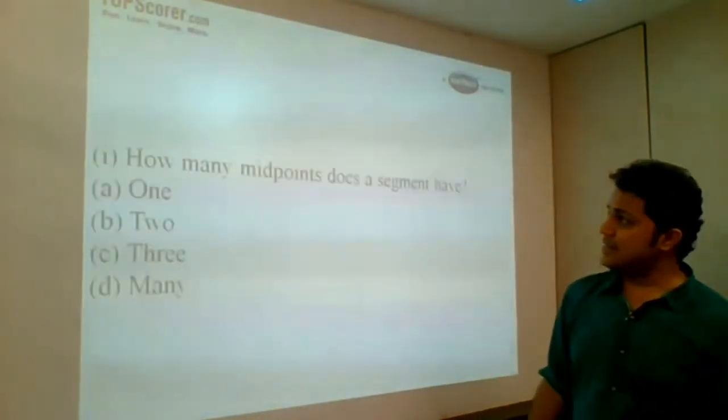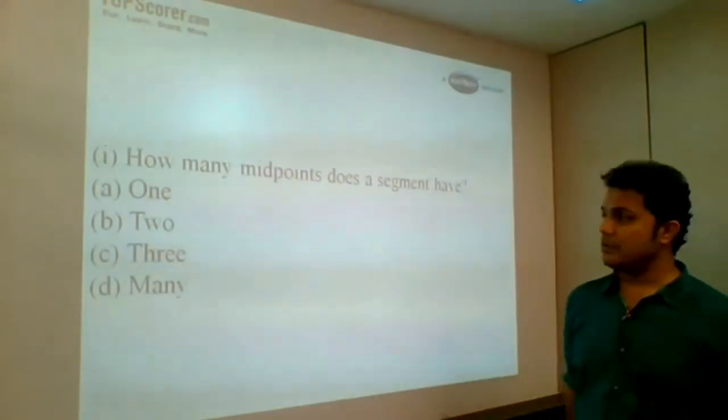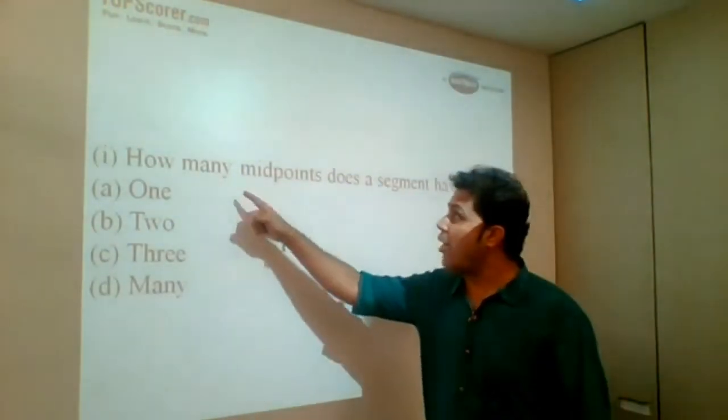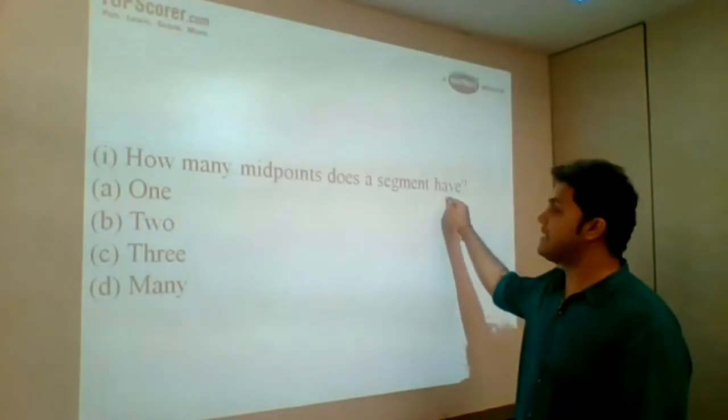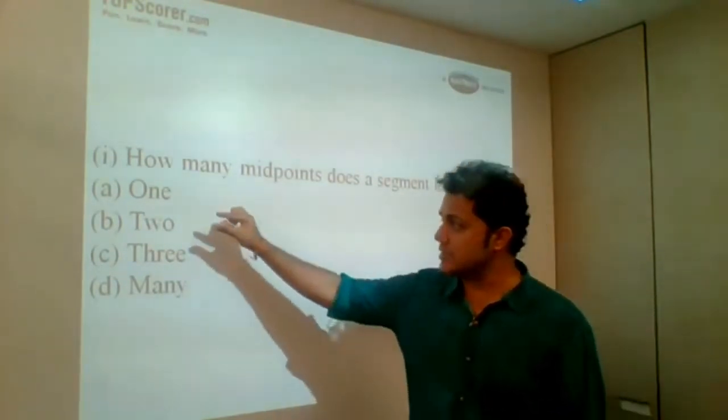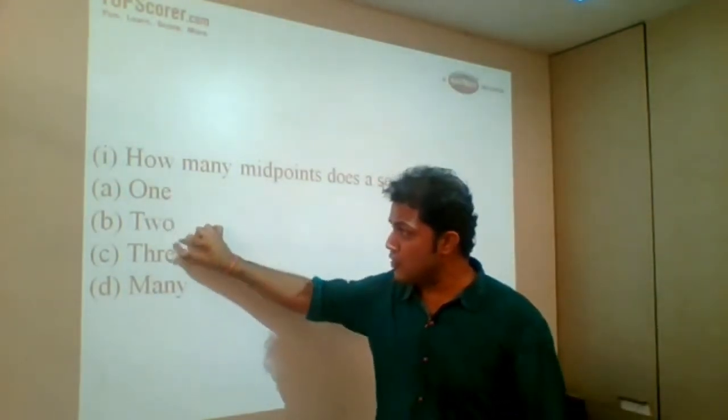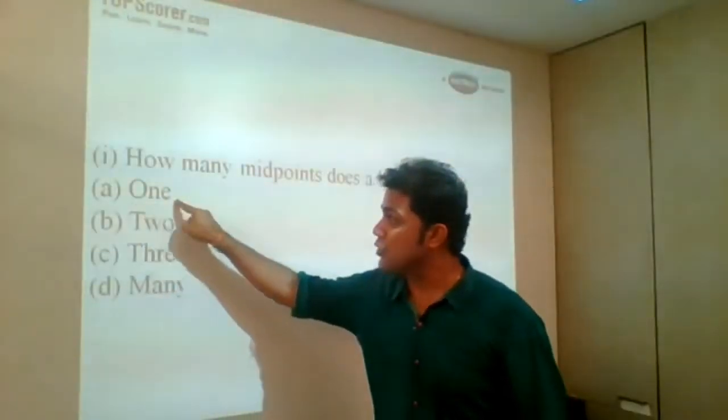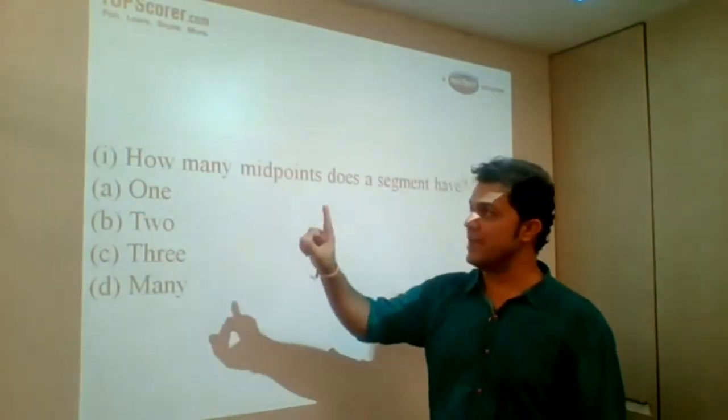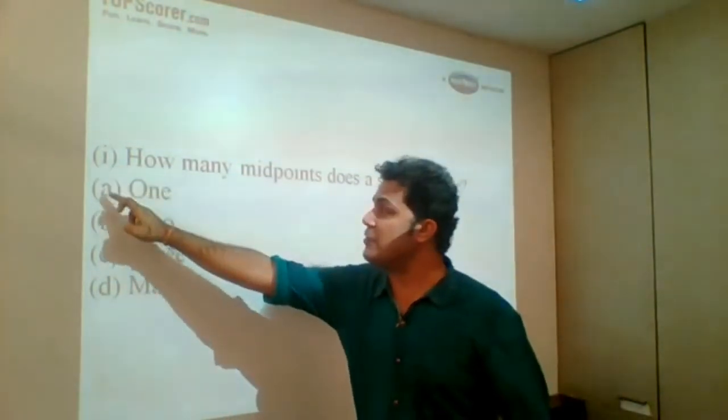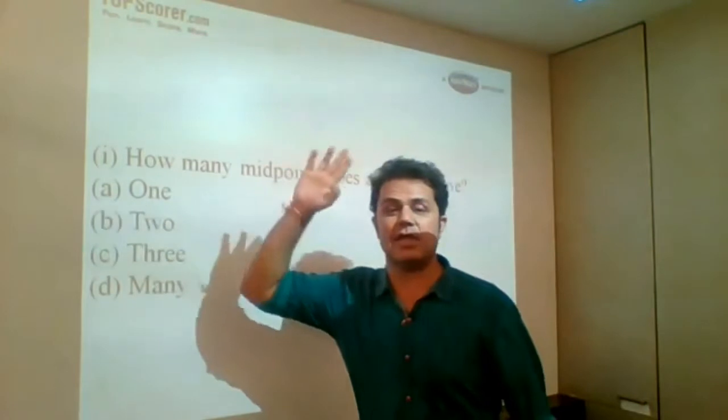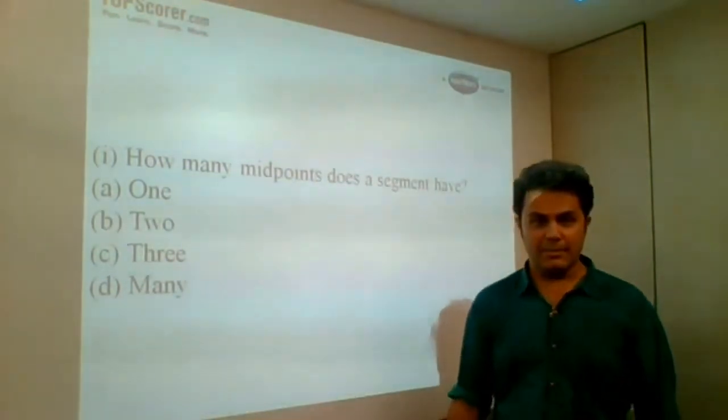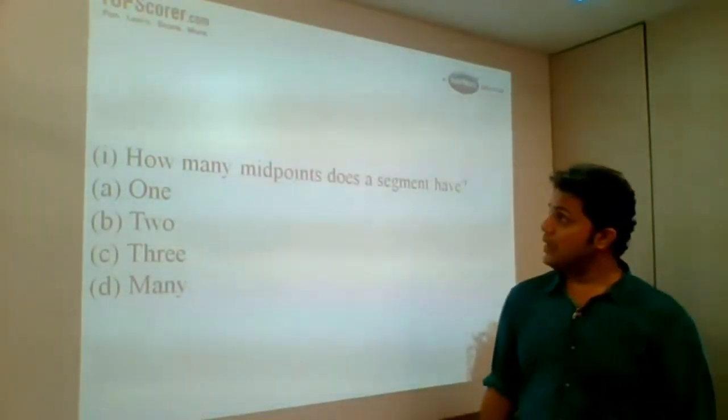Now let's understand with an example, say a question from geometry: How many midpoints does a segment have? The answer to this can be 1, 2, 3, or many. You need to select the correct answer. The correct answer is 1. So in your answer sheet, you should be answering 1 and then write the alphabet, that is A.